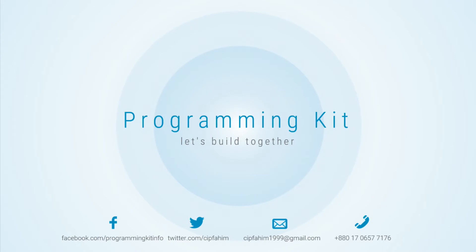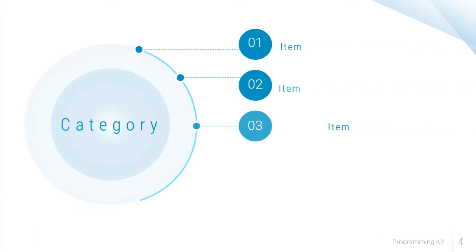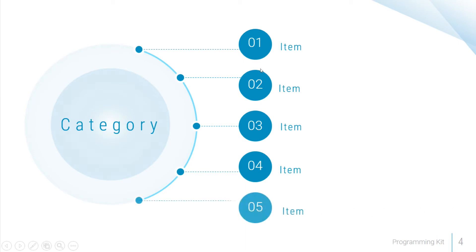We need to add the category to the item. We need to add a one-to-many relationship. That means: one category has many items, and one item belongs to one category.